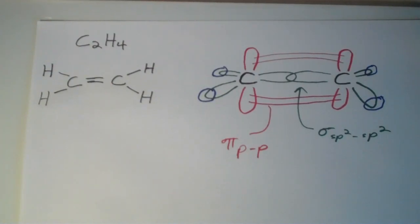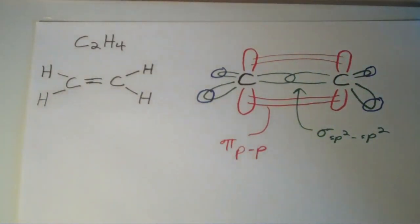Okay, so in the last video I started talking about sp2 hybridization, and in doing so we saw that a double covalent bond is actually composed of two distinct types of orbital overlaps. One of those orbital overlaps is a direct head-on overlap that we call a sigma bond. So in the case of a molecule such as ethylene, when we have two doubly bonded carbons, the sigma bond is an overlap of two sp2 hybrid orbitals.